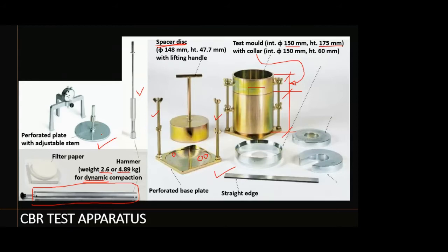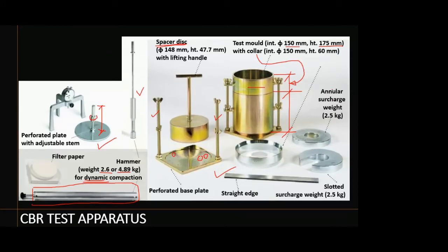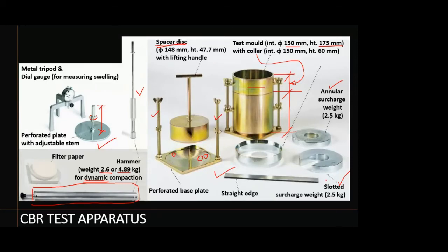There is also a perforated plate with an adjustable stem, which has a circular plate with holes through its thickness and a nut-type screw to adjust the stem height. On the right side, you have annular surcharge weights and slotted surcharge weights — solid metal plates each weighing 2.5 kg. A metal tripod and dial gauge are used for measuring swelling of the specimen.